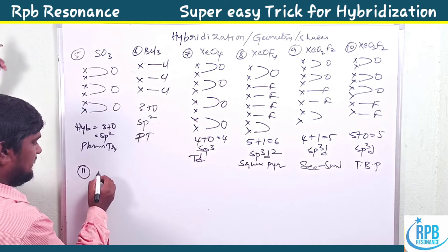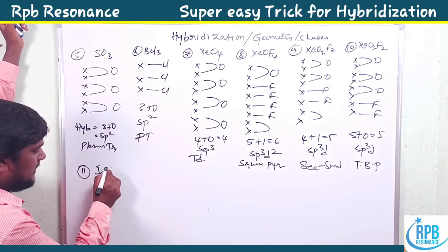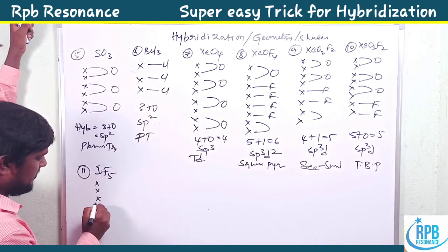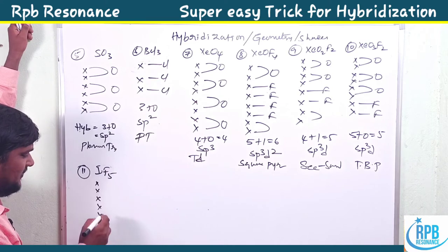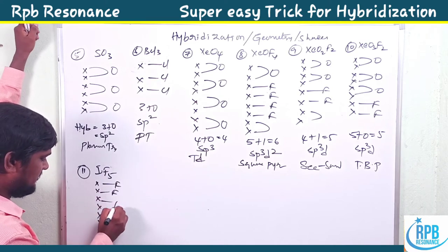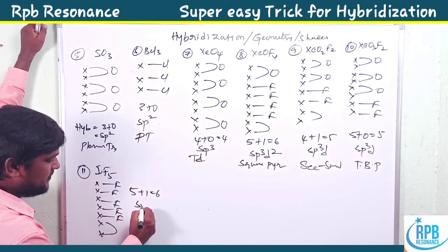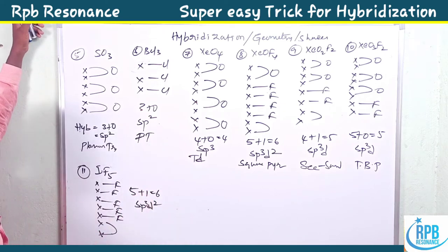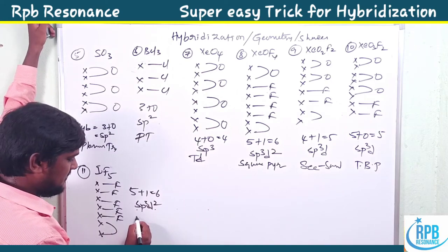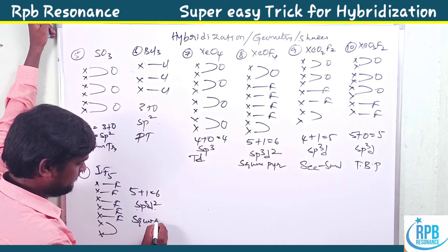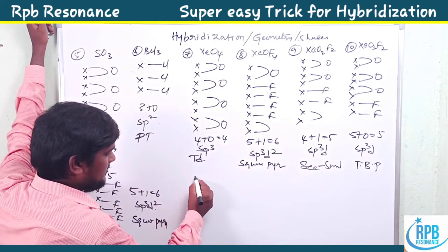For IF5, iodine's group number is seven. With five fluorines bonded, the remaining two electrons form one lone pair: five plus one equals six — sp3d2 hybridization, square pyramidal shape.